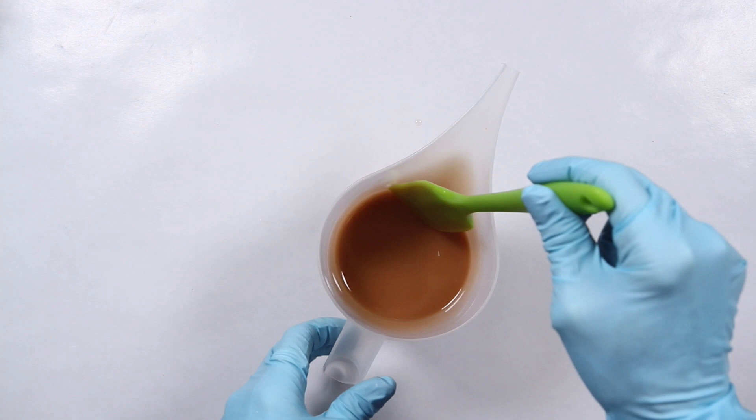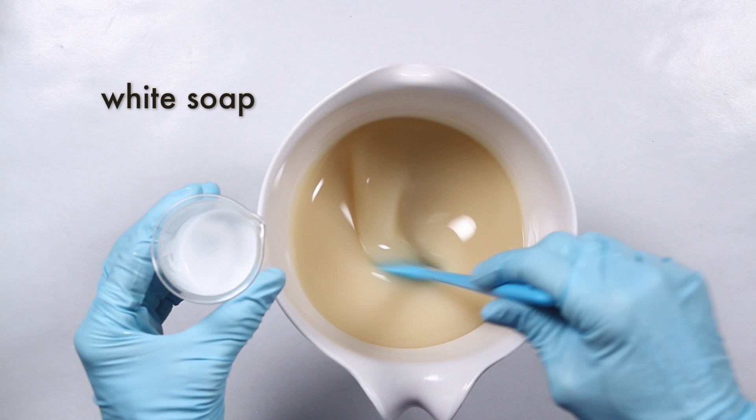Finally, to color the white soap, I used all of the titanium dioxide I mixed up earlier. This amounted to about one third teaspoon per cup of soap.